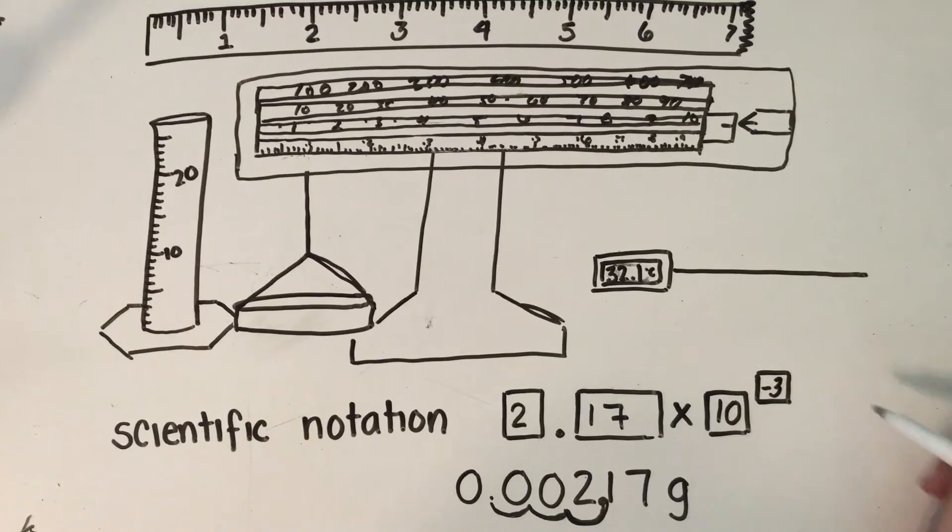Just remember negative sign just means that your original number was a small number. So instead of writing an answer as 0.00217, you'll often see it written as 2.17 times 10 to the negative 3, and that really just gets rid of any ambiguity of whether zeros are significant or not.